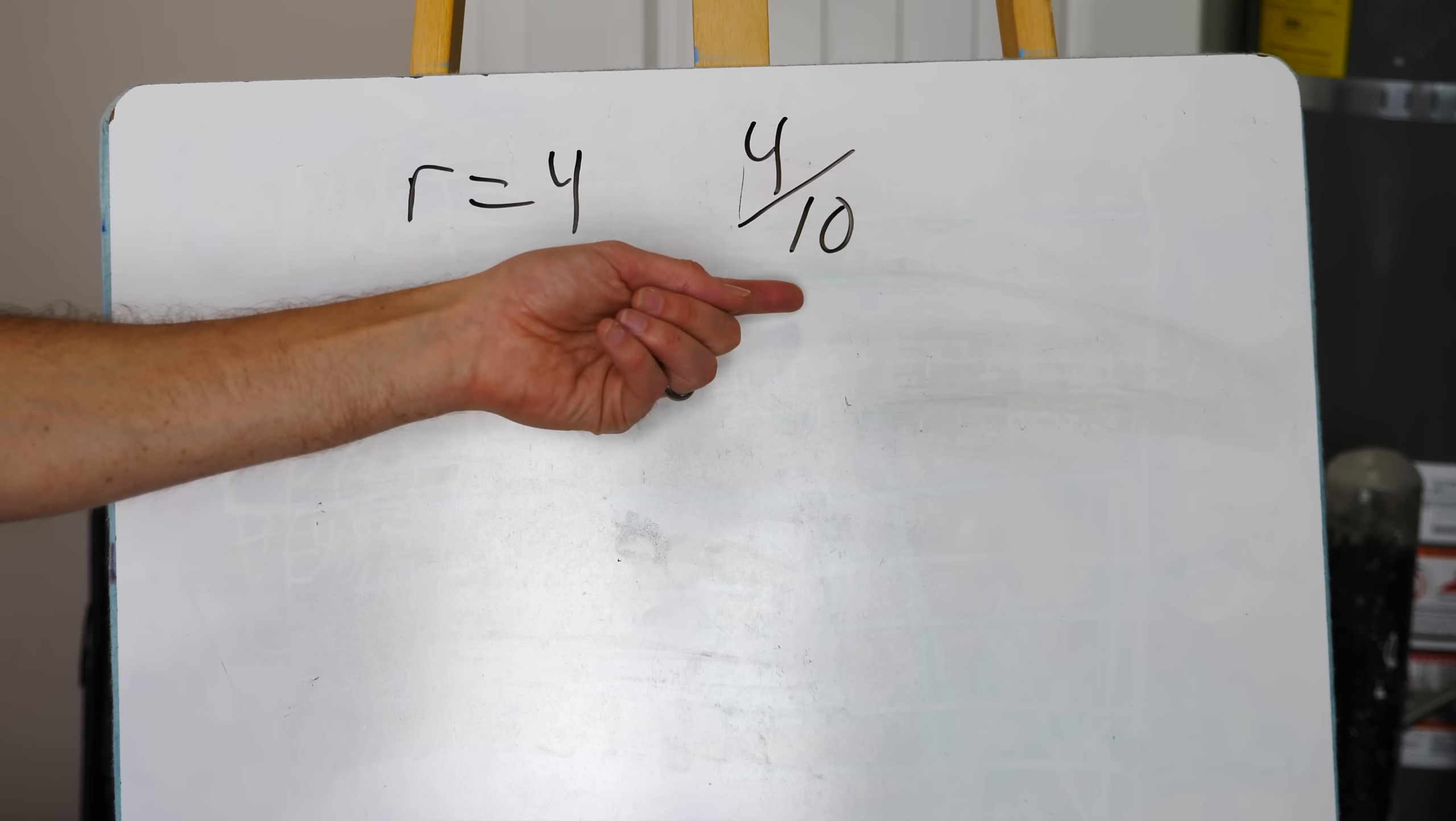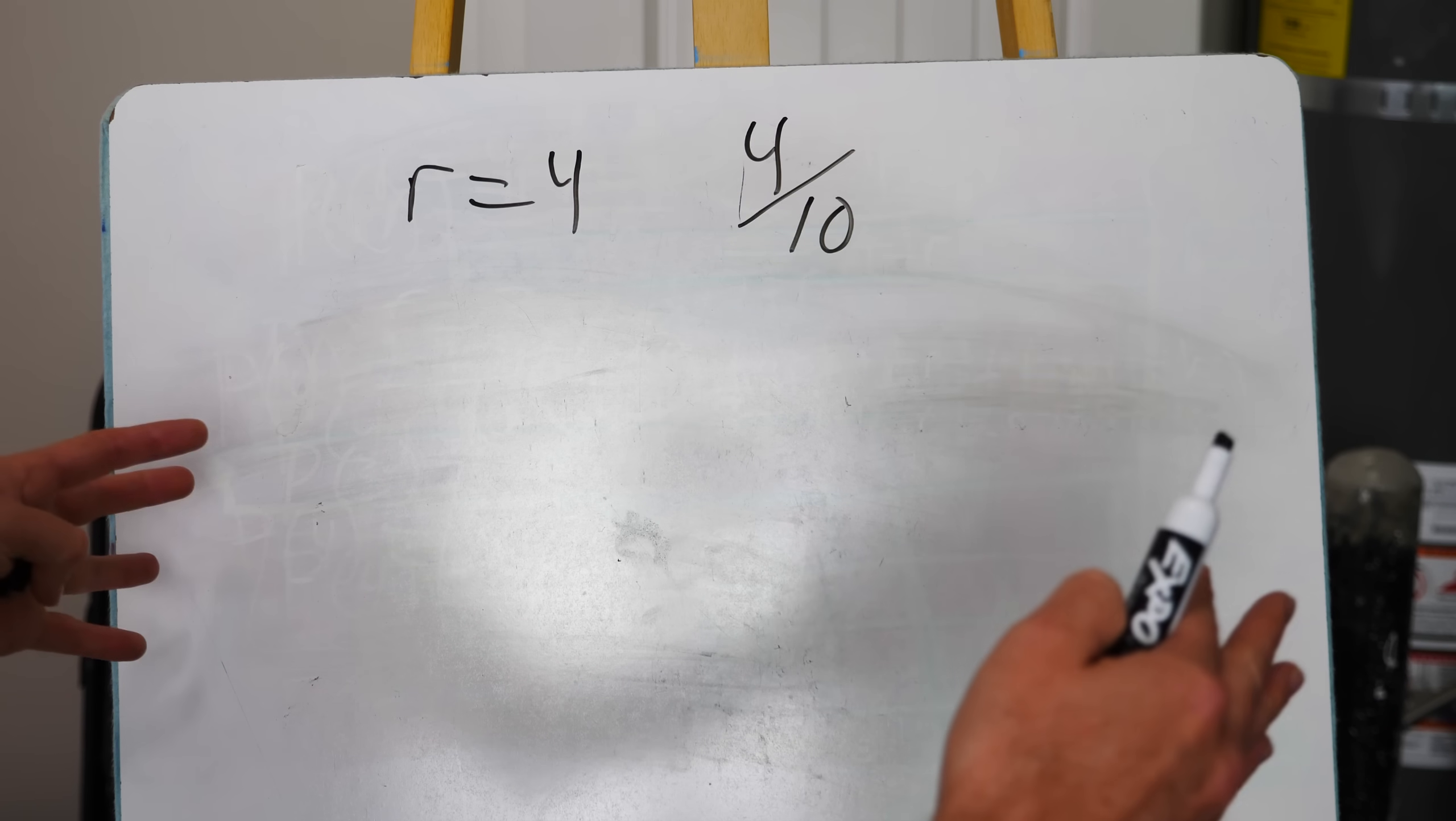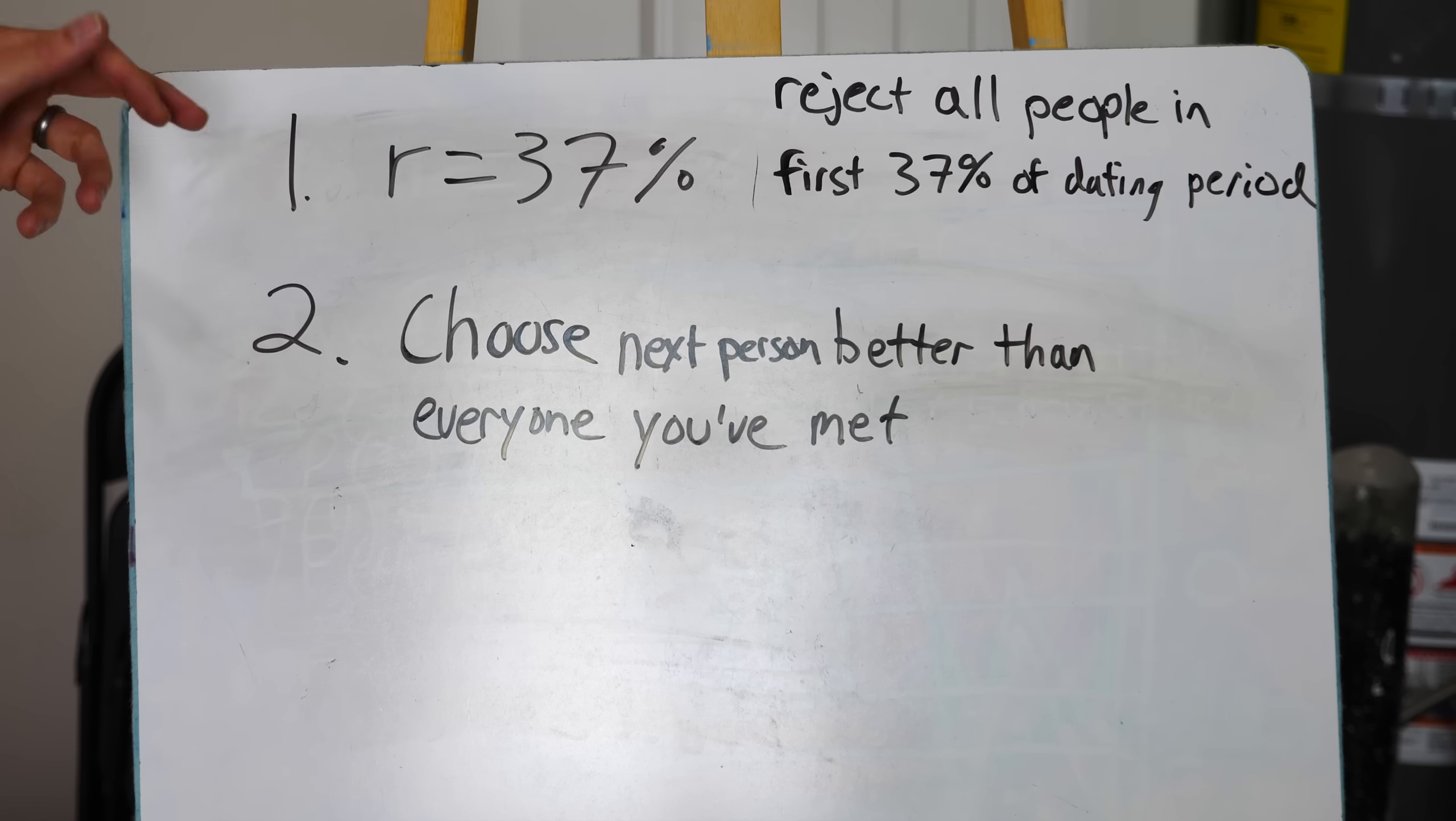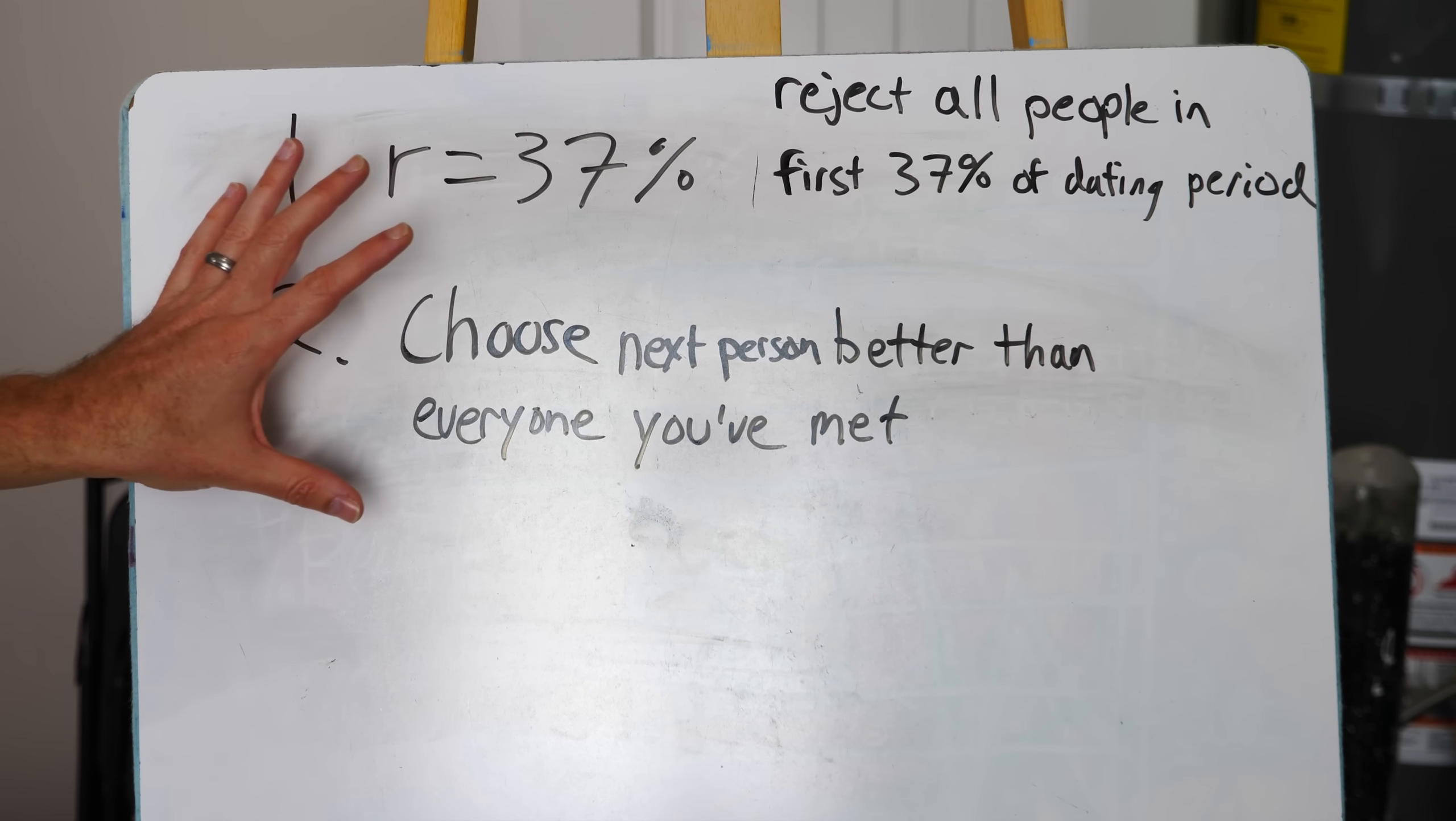But it turns out that we probably don't know the total number of people that we're going to date in our life. But you can use a formula that's pretty similar to the one I used before to find this answer. And it turns out if you just use a time-based formula that says, here's about the time I'm going to be dating in my life from 16 to 36. So I have 20 years of my life I'm going to be dating. So according to the optimal stopping theory that's based on the time period of your dating life, the two rules go like this. The first rule is that you should reject all the people that come along in the first 37% of your dating period.